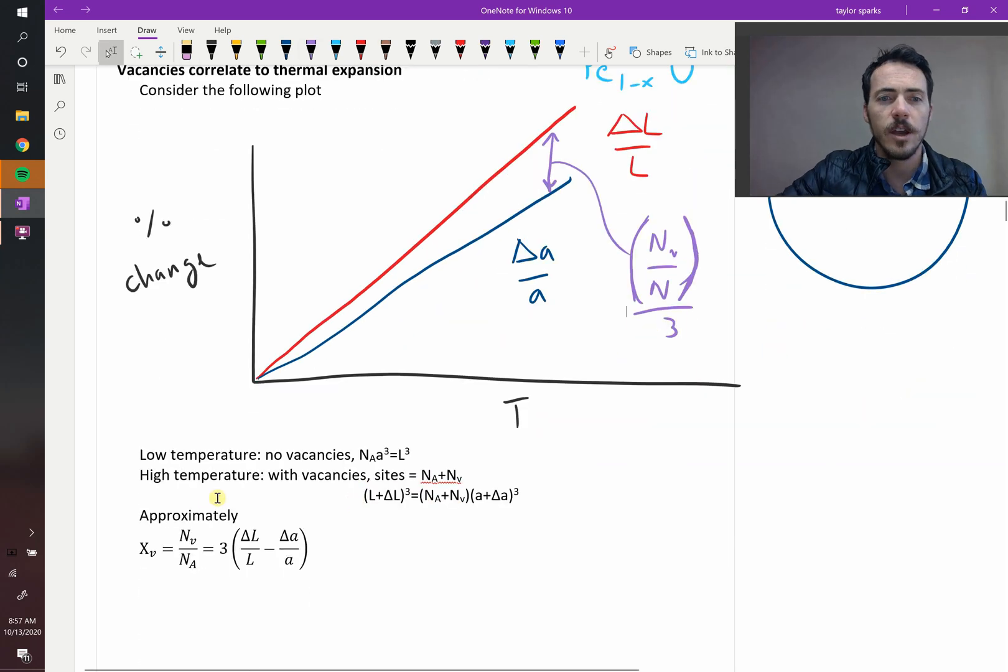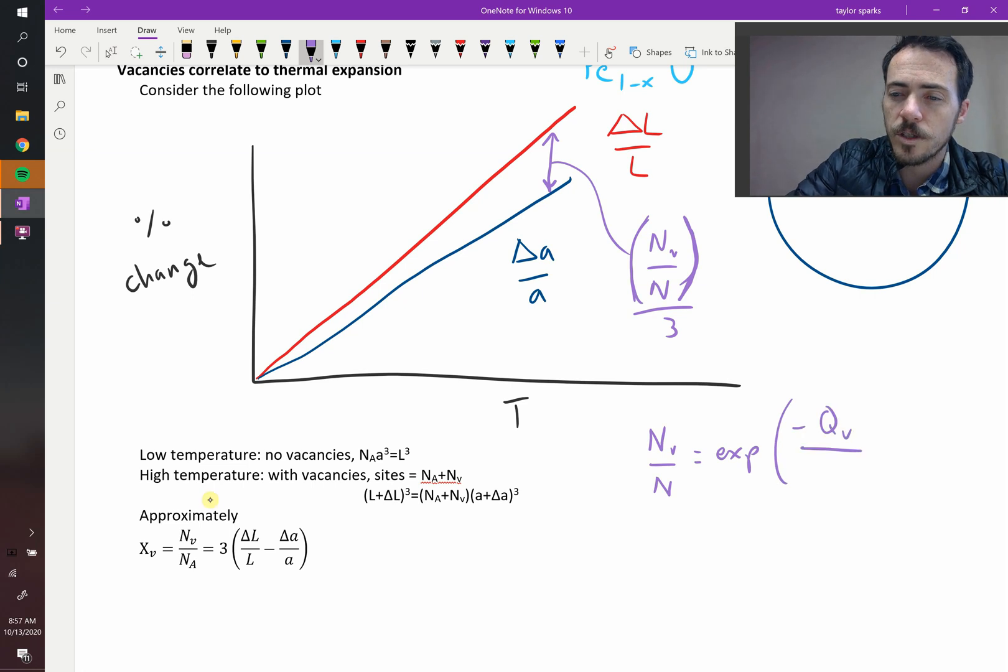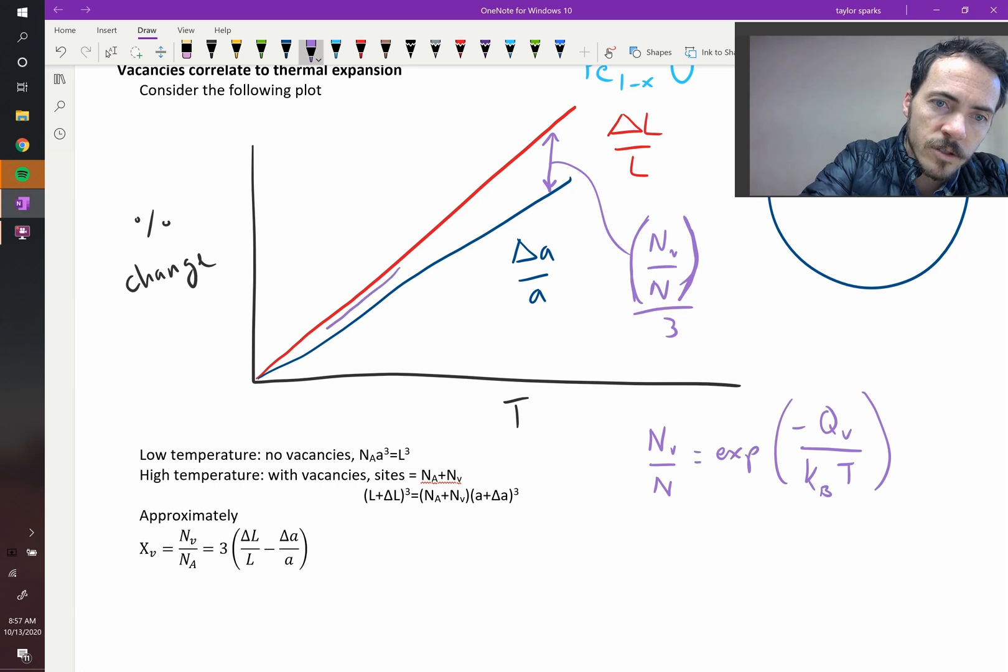The math behind that kind of goes as follows. At low temperatures, we know that it's a thermally activated process. We know that NV divided by N is equal to the exponential of the activation energy, negative activation energy for vacancy formation, over whatever your thermal energy is, KBT. So at low temperatures, NV over N is going to be a really small number. And sure enough, it approaches zero. It vanishes down here at low temperatures.